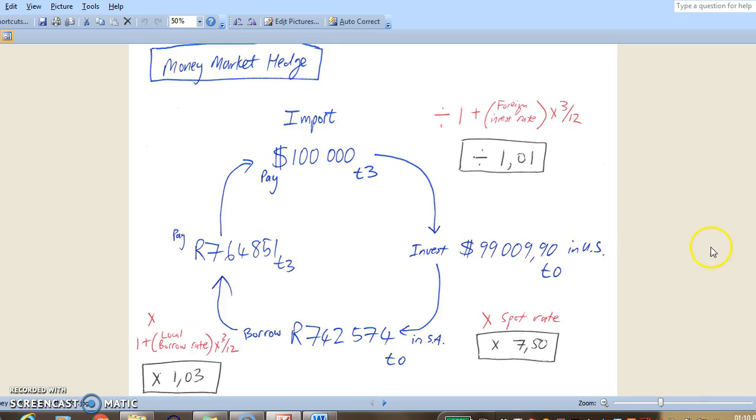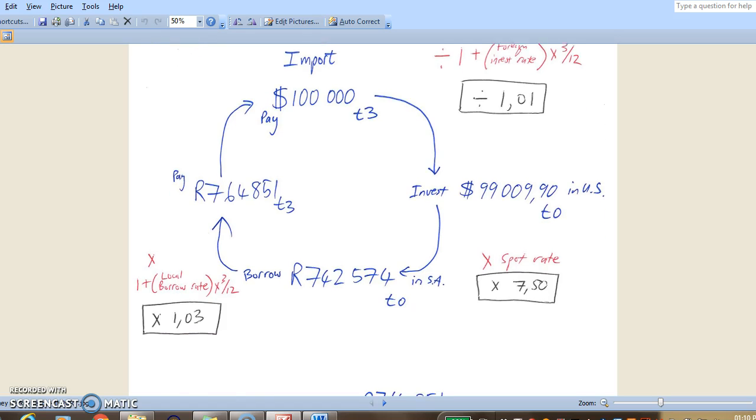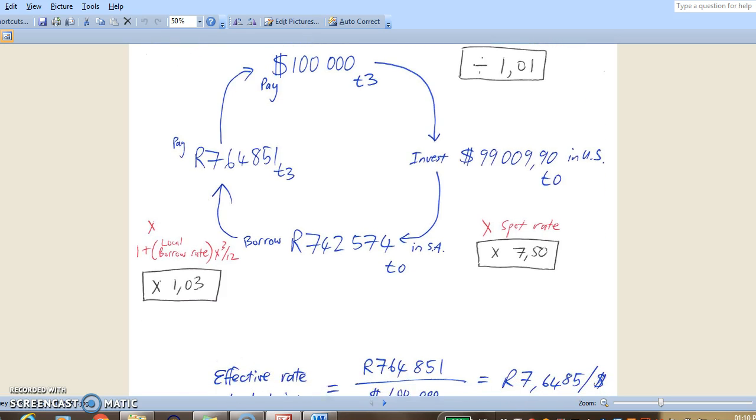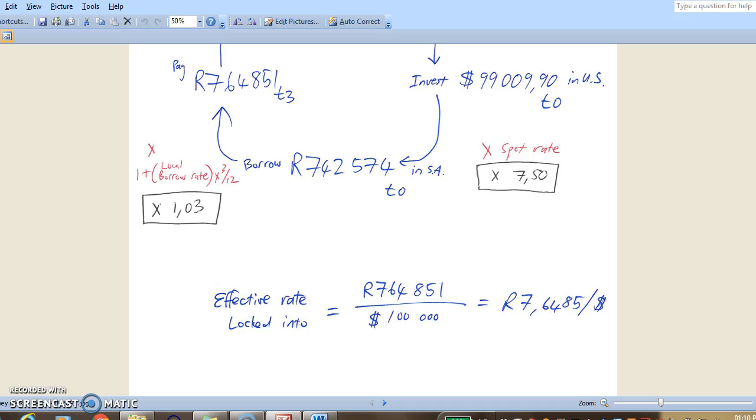So the effective interest rate is the rand amount we need to pay the bank, R764,000, divided by the US dollar amount that we will pay over to the supplier from our investment in the US. So that equates to an effective exchange rate of 7 rand and 64.85 cents.